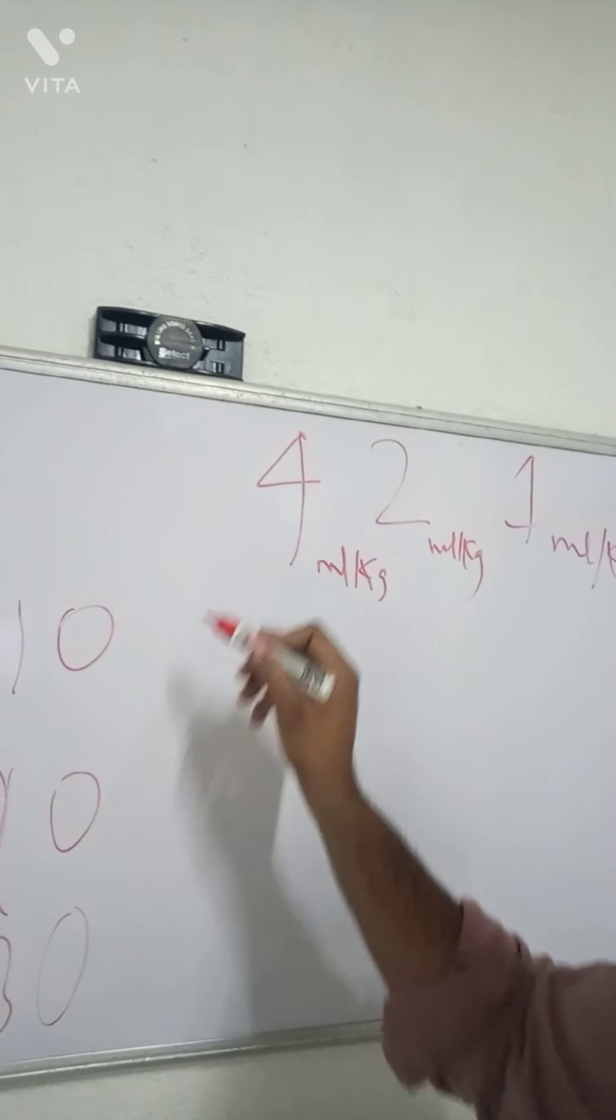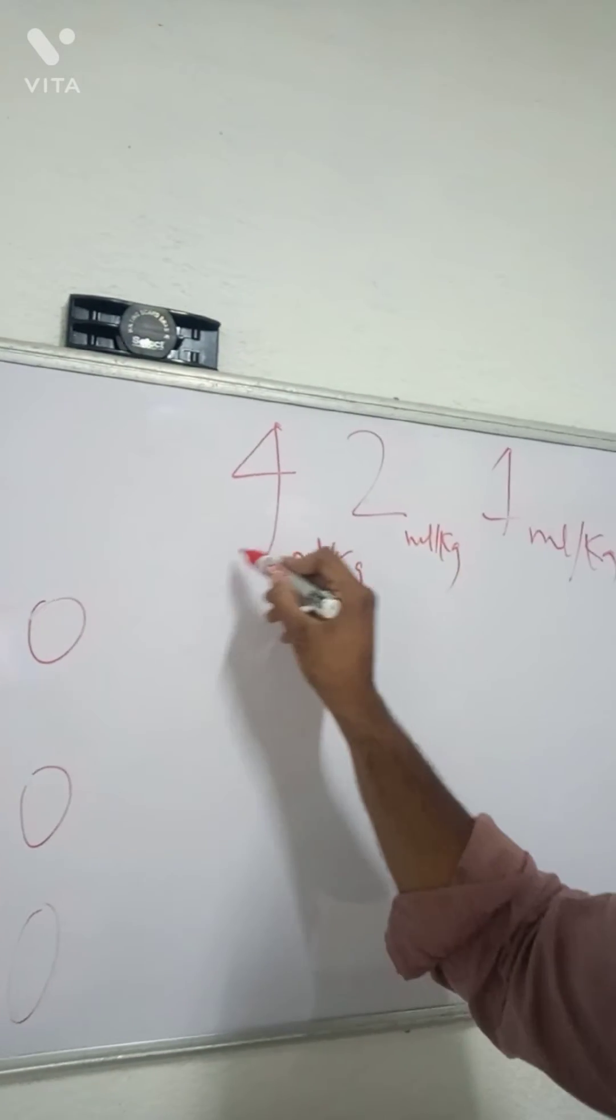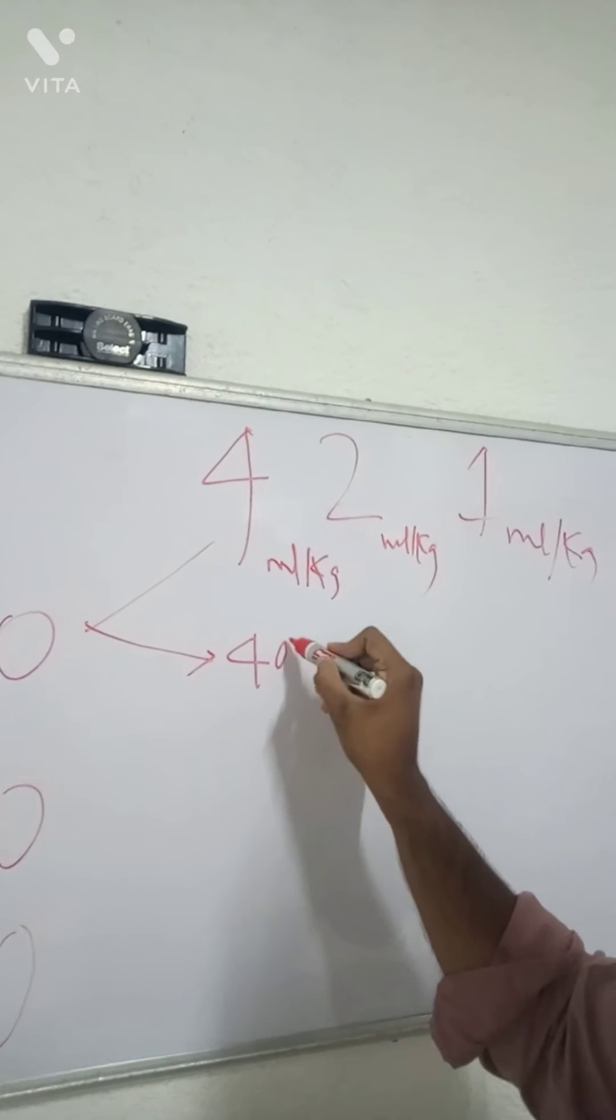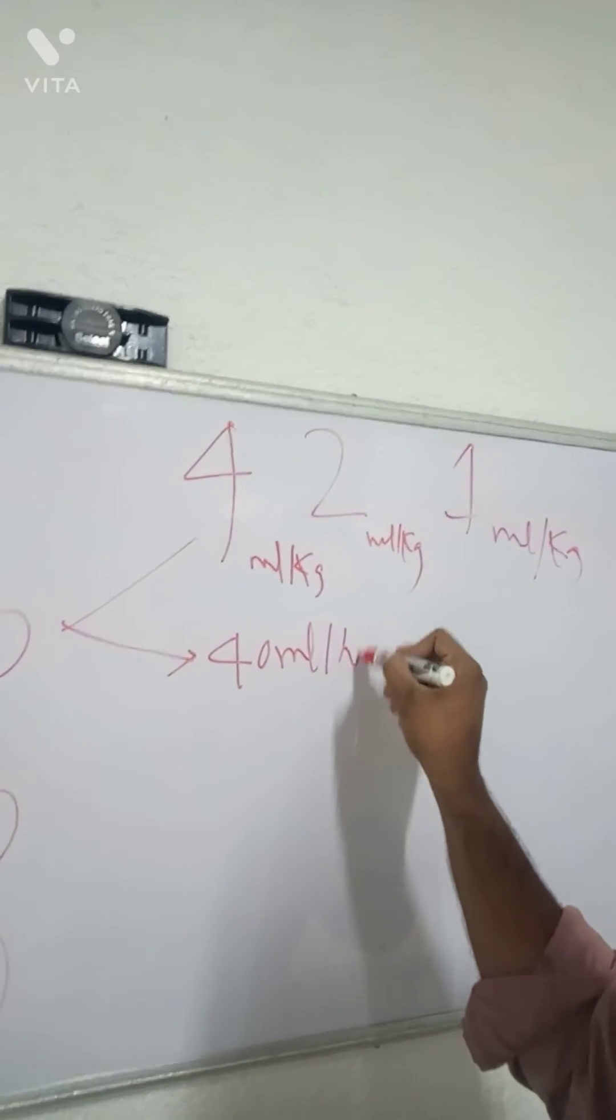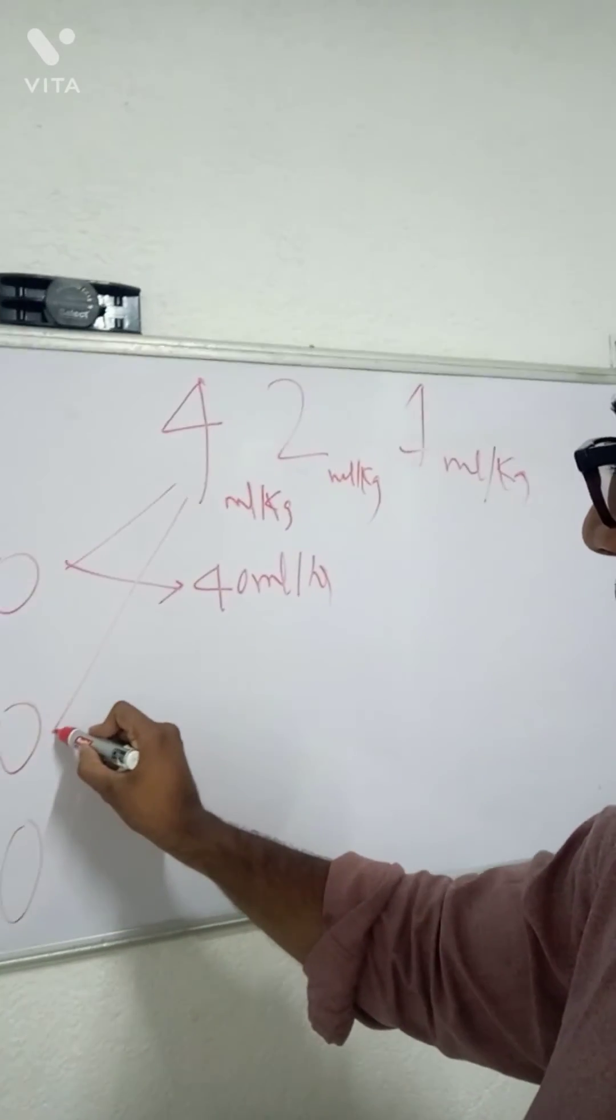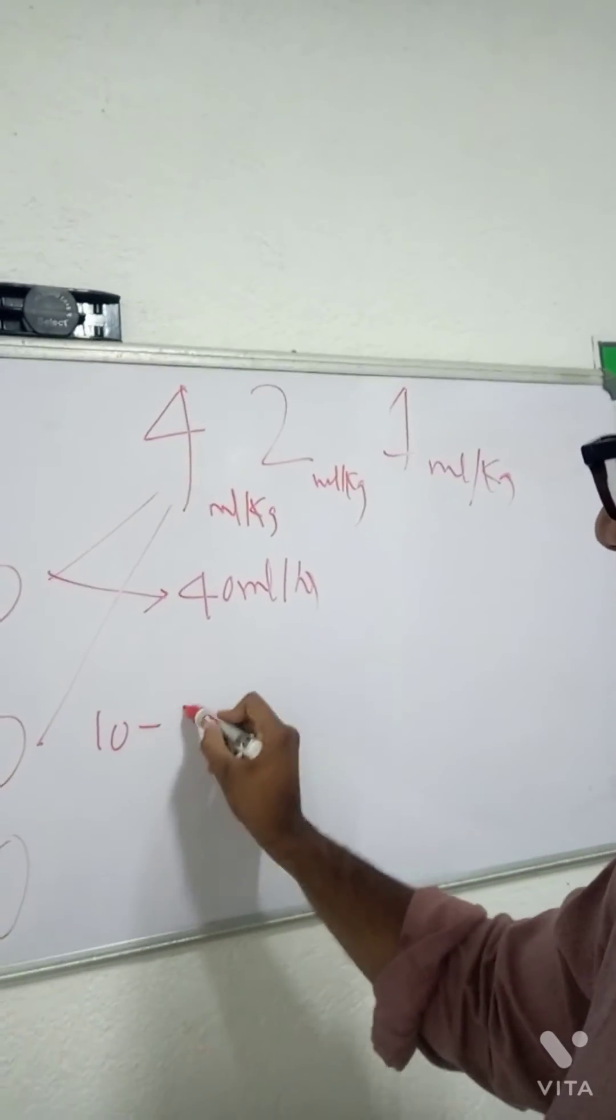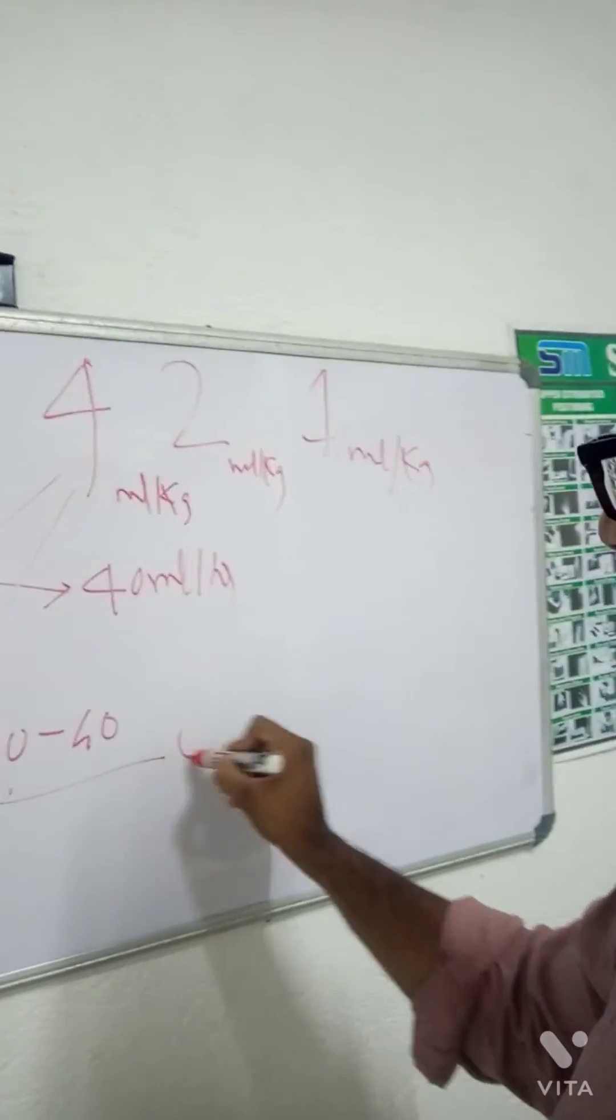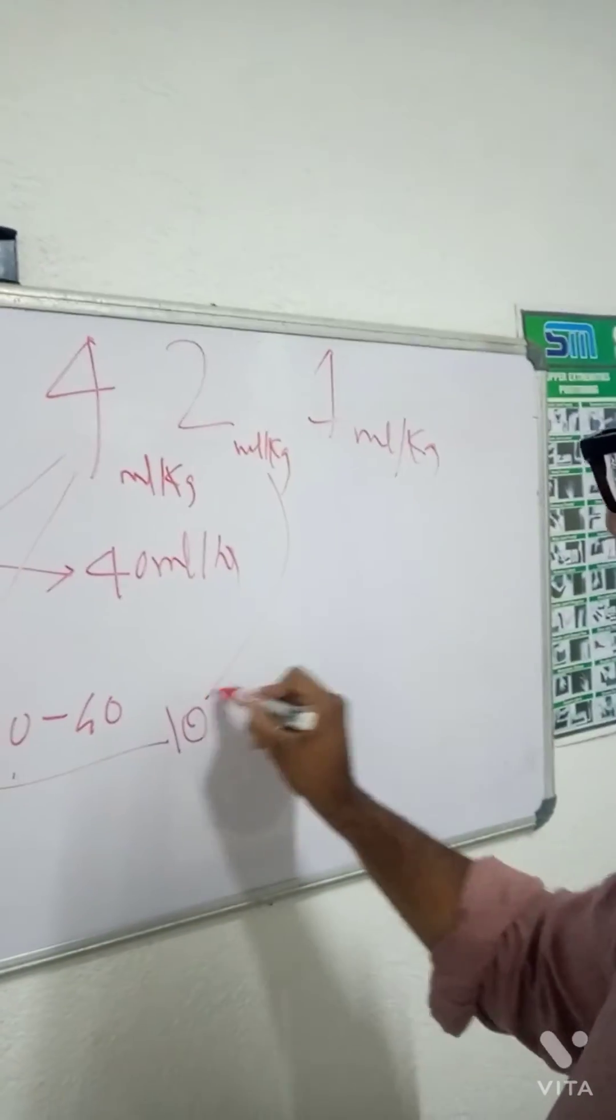So a 10 kg person will need 10 into 4 is 40 ml per hour. 20 kg person for first 10 it is 40, next 10 is 20.